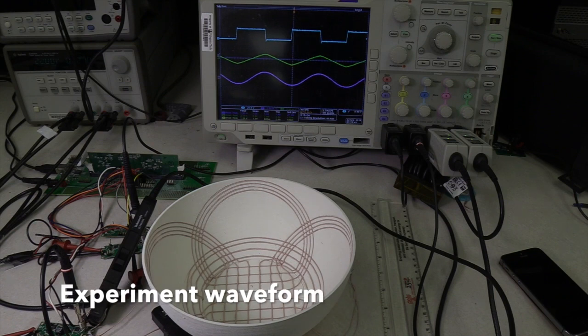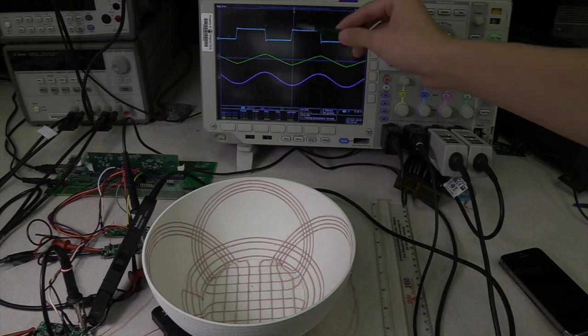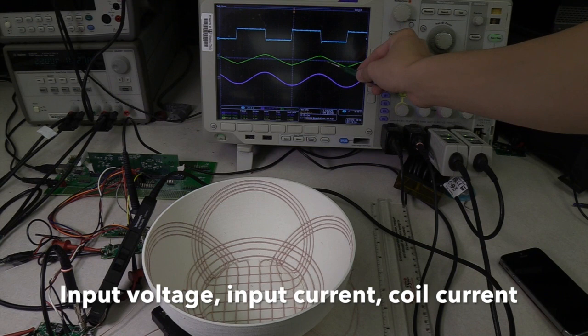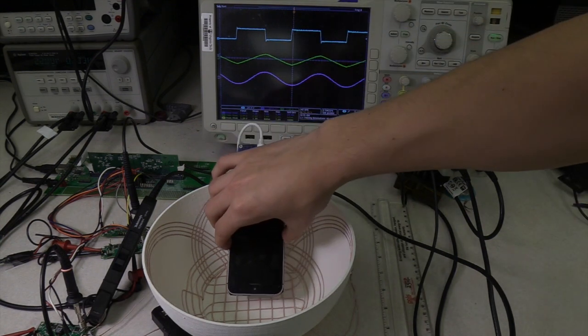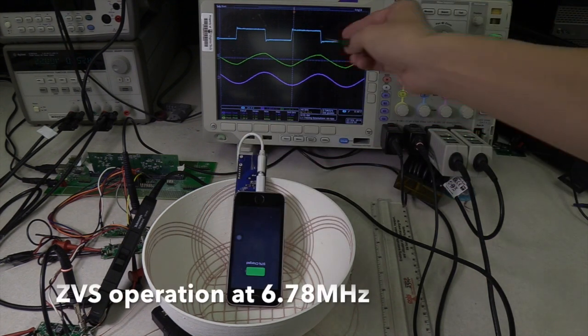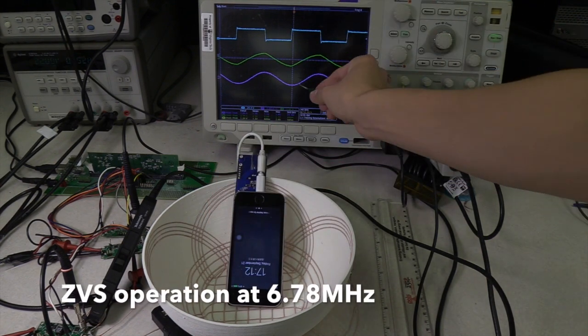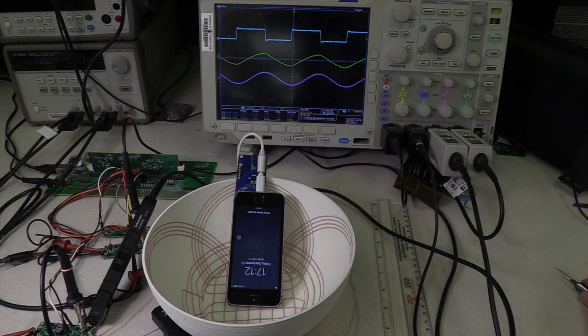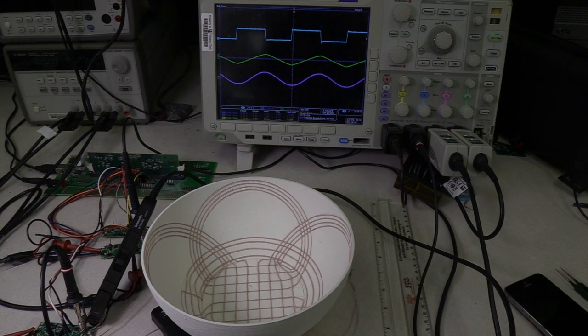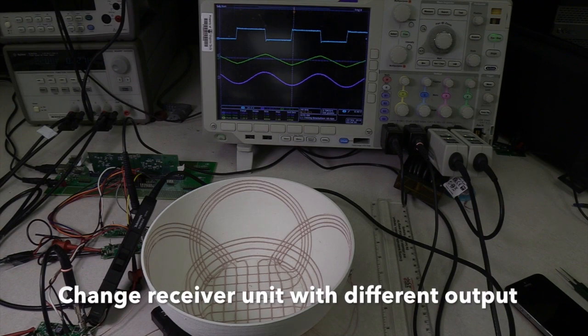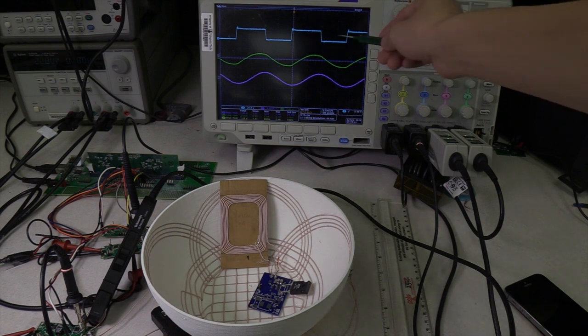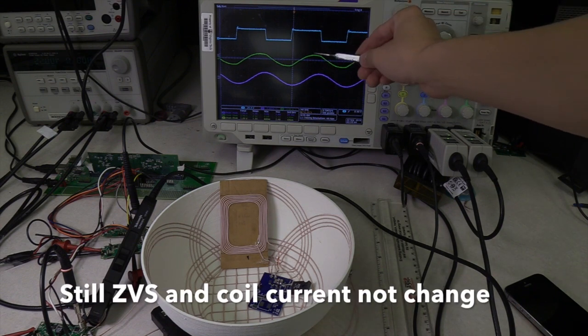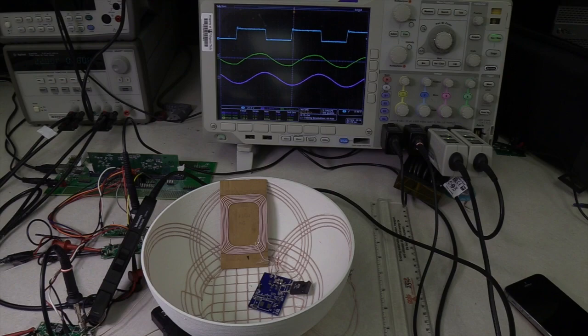The experimental waveforms during live operation are shown here. From channel 1 to channel 3 are the switching node voltage, input current, and the coil current waveforms. Here you can see the waveforms are very clean because we achieved ZVS. And then I change the output condition of the receiver coil. The waveforms remain clean due to the benefit of ZVS operation at 6.78 MHz. Thanks for watching.